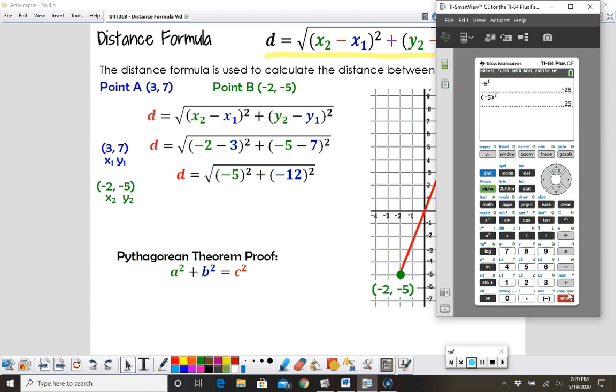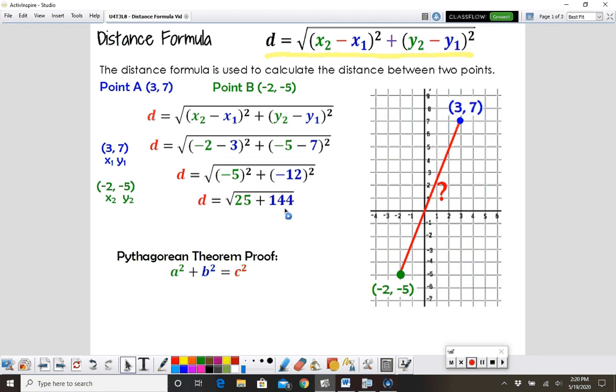So negative 5 squared is 25. Negative 12 squared is going to be 144. And then we're going to add these two amounts together. So 25 plus 144 gives me 169.